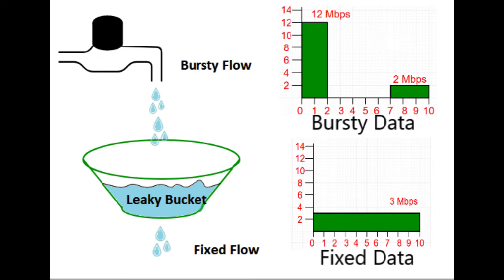Data transmission: When data needs to be transmitted, the algorithm checks if there are enough tokens in the bucket. If there are enough tokens available to represent the size of the data, the tokens are consumed from the bucket, and the data is transmitted.